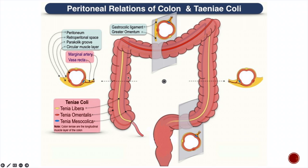Focus here in this transverse section of the ascending colon. There is the marginal artery of Drummond running along the inner border of the large intestine. From that marginal artery, vasa recta are given out, which run to the serosa — the visceral peritoneum — or from the retroperitoneal side, over to the muscularis externa as mural branches. The side where this vasa recta enters is called the mesocolic side, shown here as the blue tinea — Tinea Mesocolica.